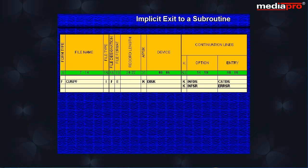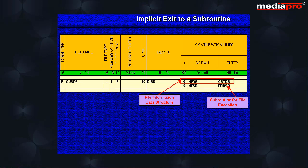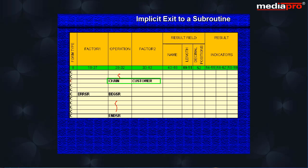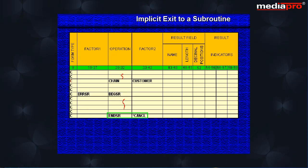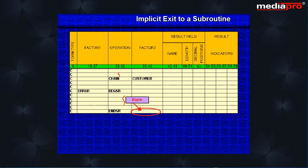Let us look at an example that handles a file exception. On the file specification, a subroutine is named with the INFSR continuation option. We also have a continuation option that defines the file information data structure. In the program, when an exception occurs on the chain operation, since no indicator is specified in columns 56 and 57, control automatically passes to the subroutine specified on the file specification. With the ENDSR operation, we can specify a return point in Factor 2, in which case the program will return to that point in the RPG logic cycle. If no return point is specified, control will pass to the default error handler.